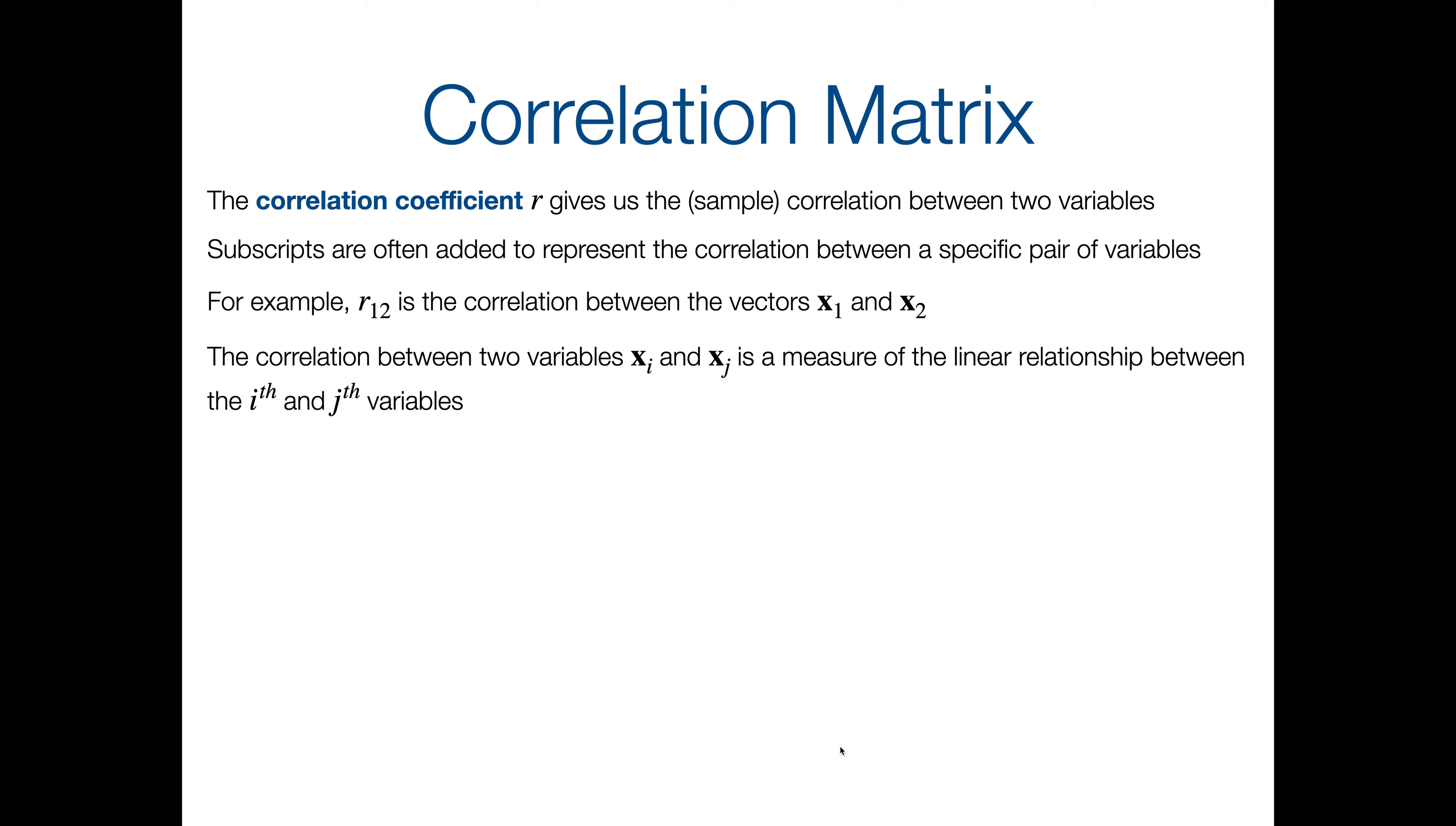And correlation doesn't make a distinction between the explanatory and response variable. So what does that mean? That means that r12 is equal to r21. So again, that's a fact that we know the correlation between a and b is the same as the correlation between b and a. And here's one that maybe we didn't realize. The correlation between x1 and x2 is equal to the correlation between the standardized versions z1 and z2. So z is going to be the notation that we're using for something that has been standardized. We talked about how to standardize in the last one. So correlation isn't affected by linear changes of scale.